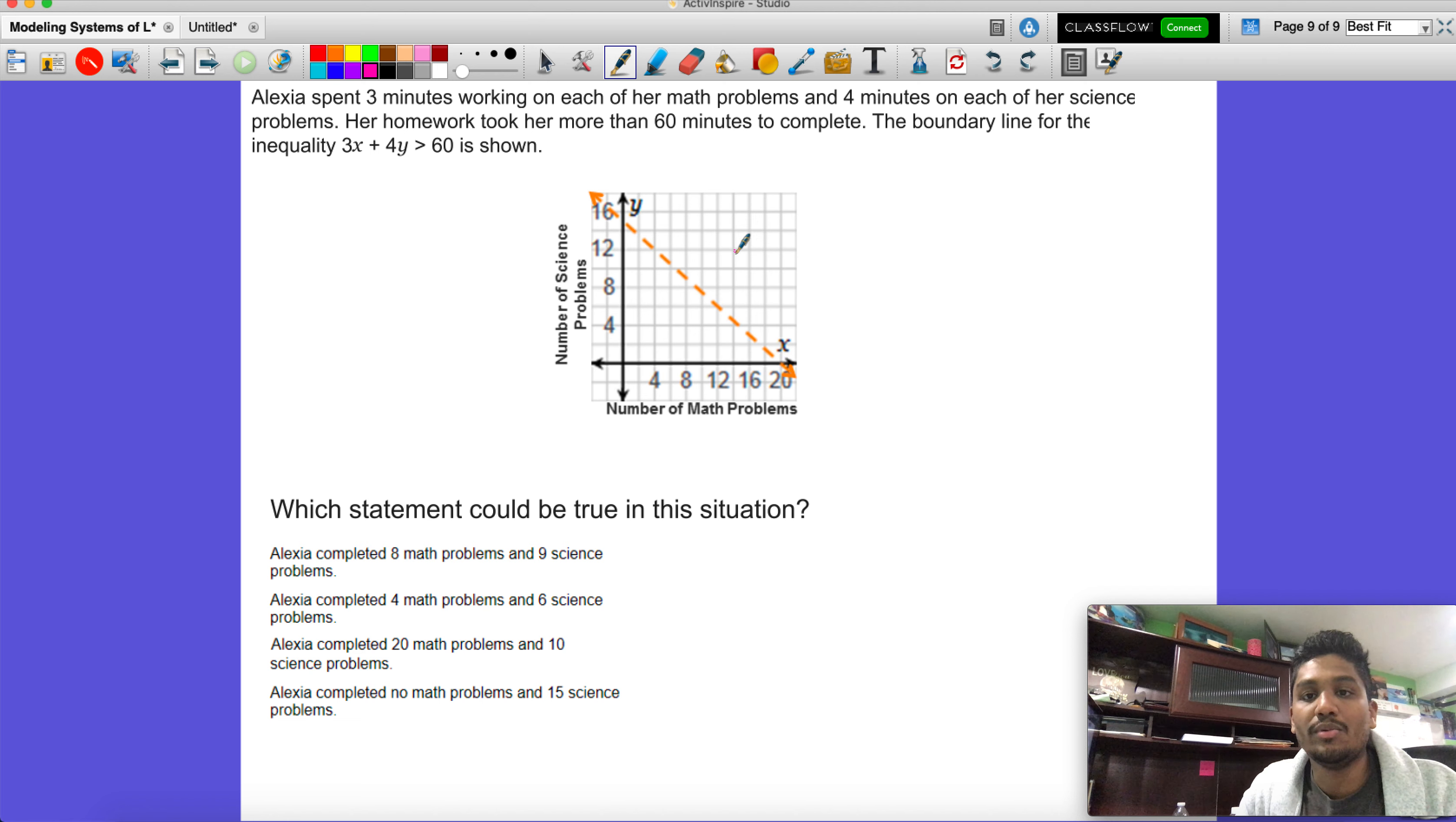Let's just go back and make sure we understand how to do this. If we had to create this, we would have let x equal - now what do you think x would have equaled? If you think it's the minutes working on a math problem, it's not that. This is actually going to be the number of math problems, since she spent three minutes on every math problem. And then y would have been the number of science problems.